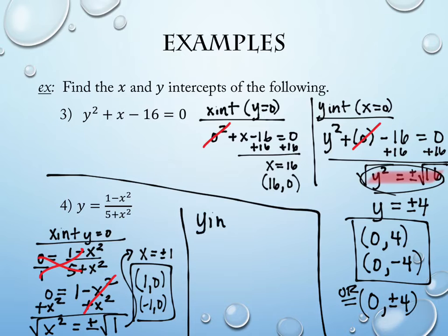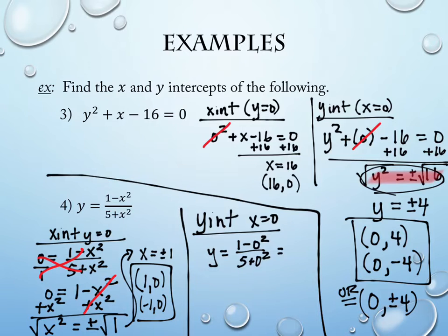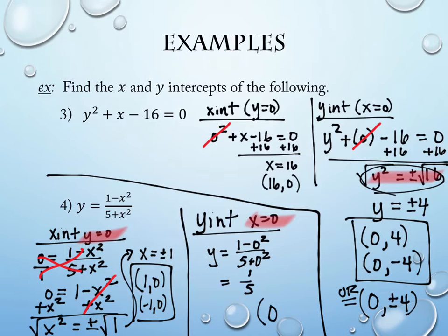For the y-intercept, set x equal to 0: y equals (1 minus 0 squared) over (5 plus 0 squared), which simplifies to 1 over 5. The y-intercept is the ordered pair (0, one-fifth).